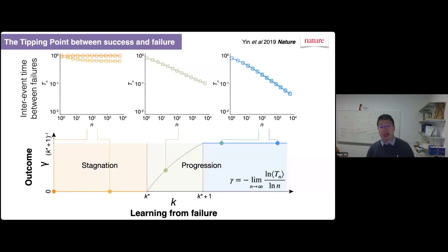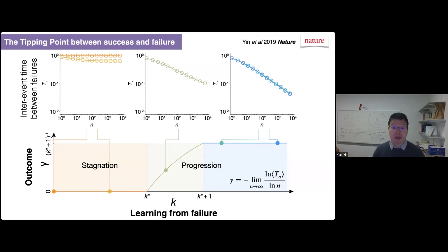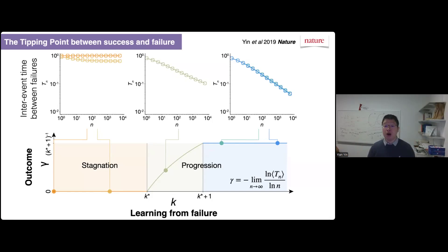What's really intriguing here is that on the one hand, a small variation in k can make huge differences in the eventual outcome — stagnation or progression. But at the same time, our model predicts that stagnation and progression regimes follow fundamentally different efficiency and quality dynamics as people fail over and over again. And this turns out to be a prediction we can directly test in our data.